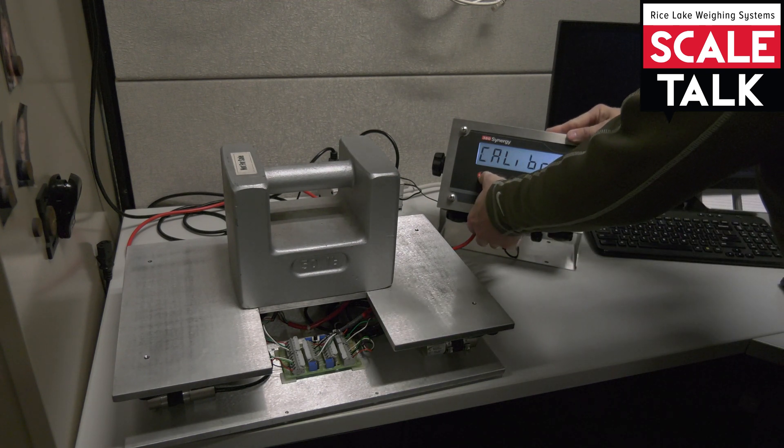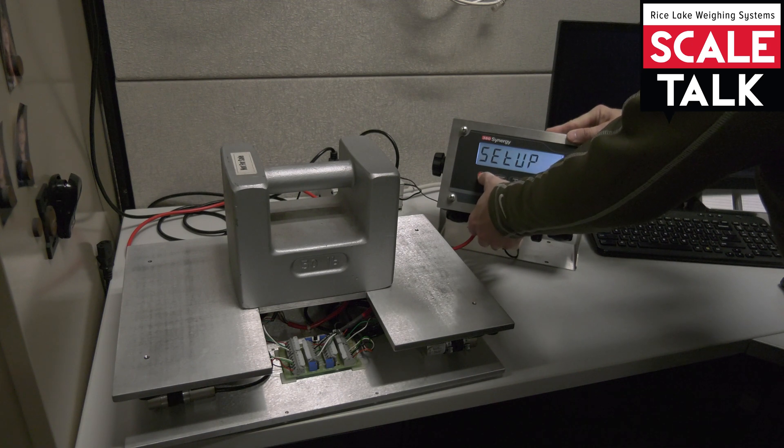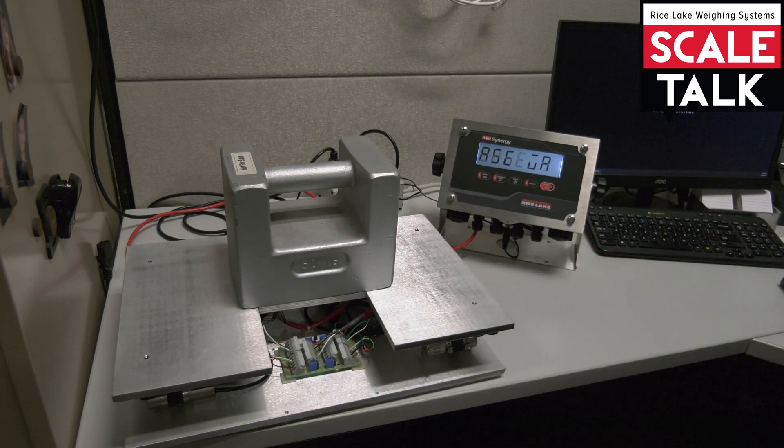Then I'll exit by going back up to setup and pressing that zero key one last time where it will save and exit. And hopefully we have 50 pounds. There we go. The scale is now set up as a 50 pound scale and properly calibrated.